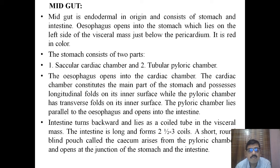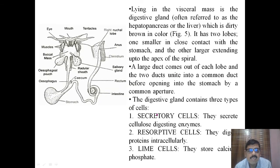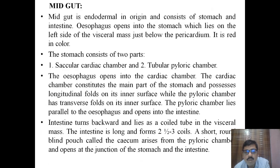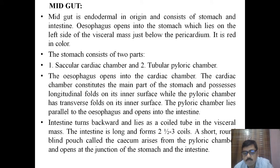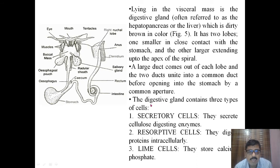The intestine turns backwards and lies as a coiled tube, forming two and a half coils. A short round blind pouch called the caecum arises from the pyloric chamber and opens at the junction of the stomach and the intestine. Lying on the visceral mass is a digestive gland, often referred to as the hepatopancreas or liver, which is dirty brown in color.